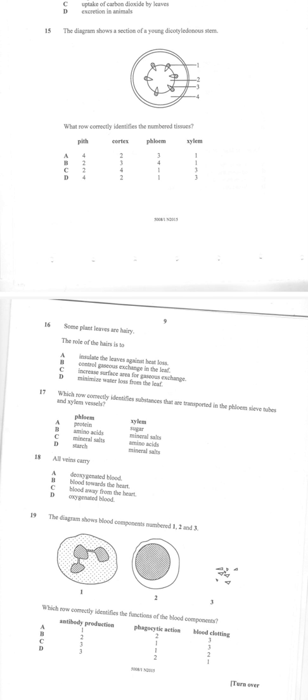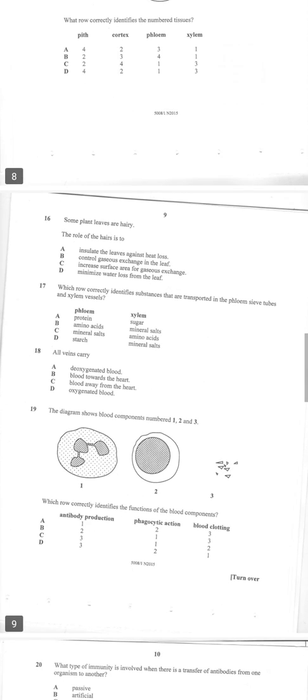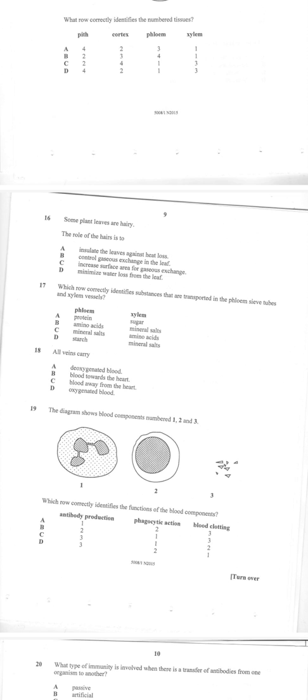And then number one is our phloem. The pith is supposed to be number two, cortex number four. So two, four, and the phloem number one. The xylem is on the inner part, number three. So number 15 is C.